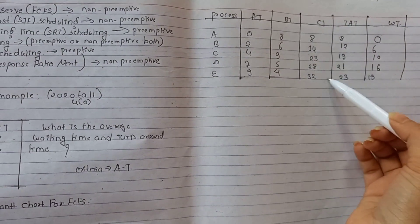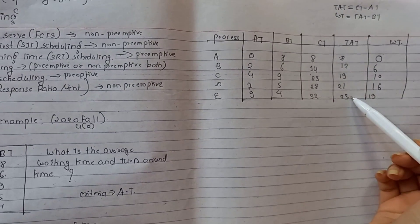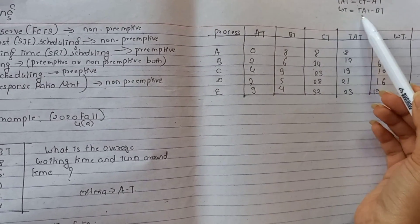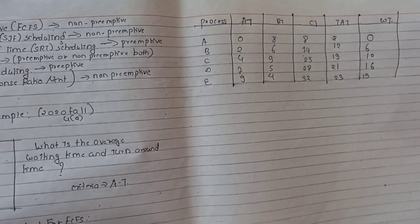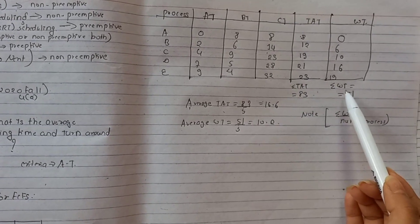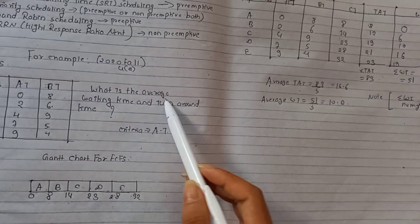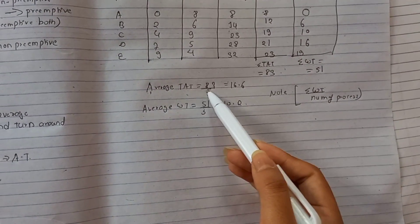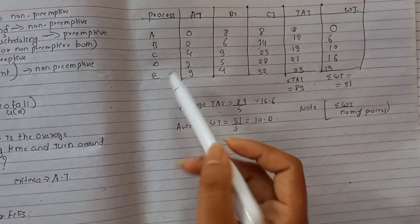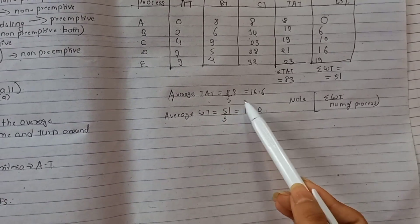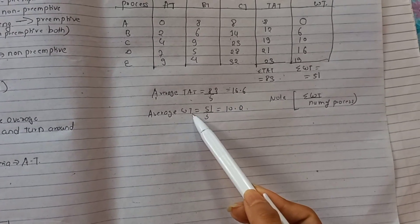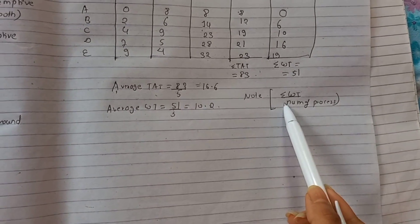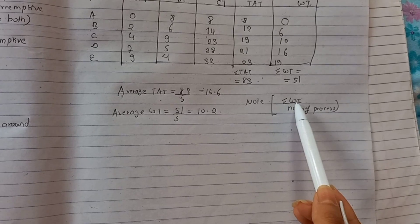Turnaround time is calculated as completion time minus arrival time. Waiting time is turnaround time minus burst time. From the table, total turnaround time divided by number of processes gives average turnaround time. We have 5 processes: 83 divided by 5 equals 16.6. Average waiting time is total waiting time by number of processes: 51 divided by 5 equals 10.2.